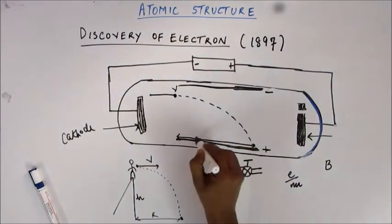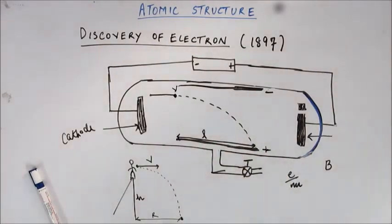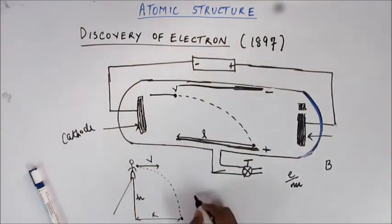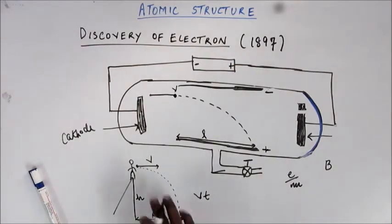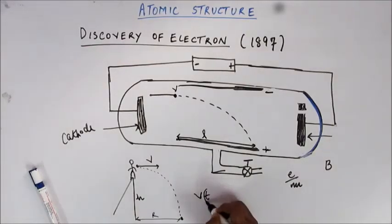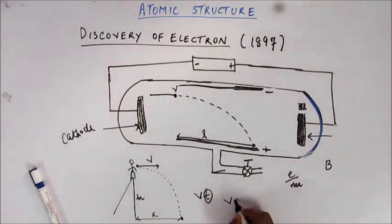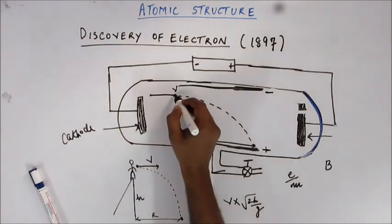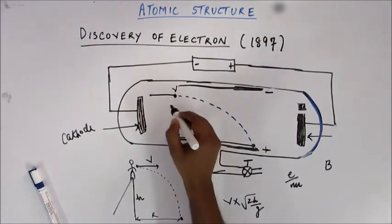Now how do you find this R? Because if you are able to find this R, you will also be able to find this distance L. How do you find R? You find R as velocity multiplied by time - this is distance equals horizontal velocity times time. The horizontal velocity remains constant, so all you have to do is find out the time, and time you know is the square root of 2H upon G.